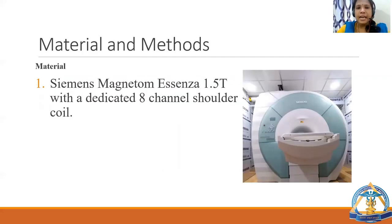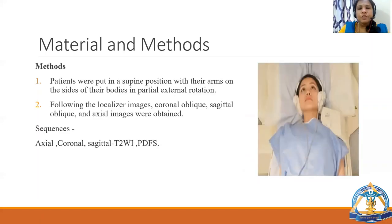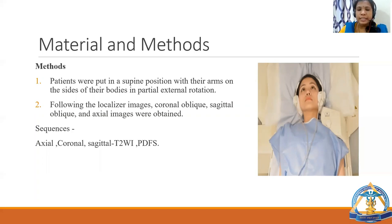For materials and methods, a Siemens Magnetom Essensa 1.5 Tesla with a dedicated 8-channel shoulder coil was used. Patients were positioned supine with arms at their sides in partial external rotation. Following localizer images, coronal oblique, sagittal oblique, and axial images were obtained using T2-weighted and proton density fat-saturated image sequences of axial, coronal, and sagittal planes.